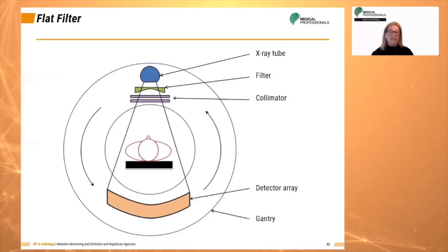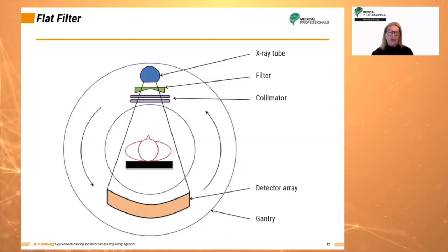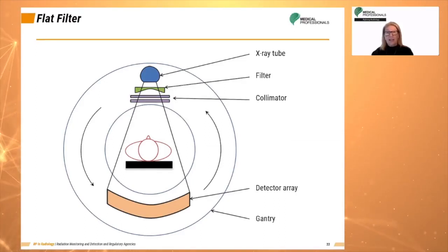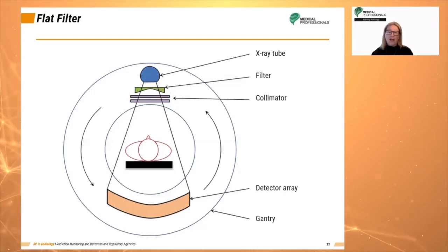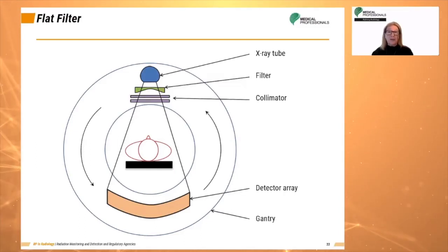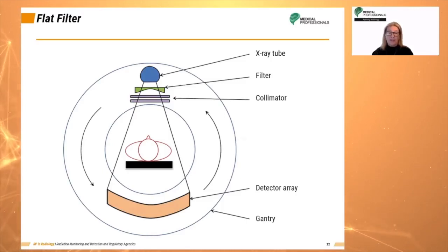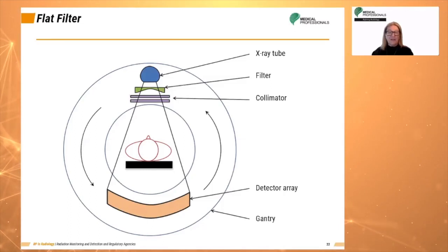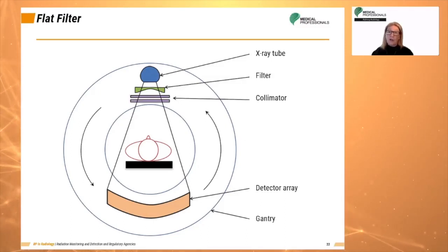CT scanners have x-ray filters that shape both the geometry and the spectrum of the beam. Standard filters are usually made of aluminum, like a radiographic tube filter, but with some important design differences. CT filters are generally thicker than radiographic filters and often combine aluminum with materials such as Teflon or copper. Flat filters attenuate low-energy x-rays, which would increase patient dose without adding to image production.